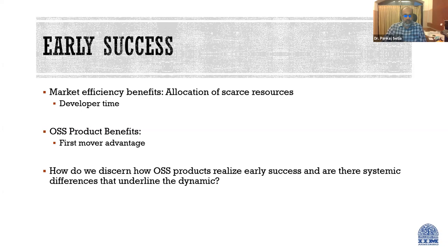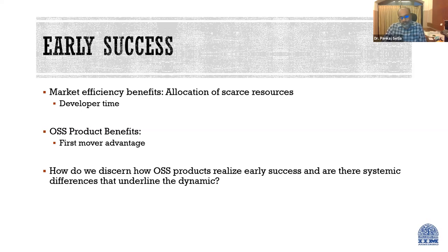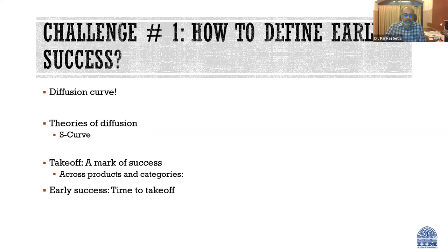There is a first-mover advantage — who gets there first matters. So who becomes successful sooner is an important question. To address that, this research went after how OSS products realize early success. Are there any systemic differences we can unravel? There are certain products that are likely to be more successful than others. Can we see that? That was the question in this very broad bazaar-like phenomena.